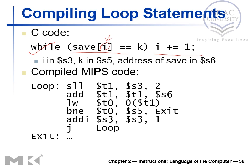Let's see how we can generate code for this while loop. As always, we need to assign registers: i is assigned to s3, k is assigned to s5, and the base address of save is stored in register s6. From our discussion of the load instruction, whenever we have an array, we need to know the base address of that array to find the address of any element.